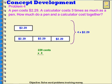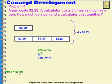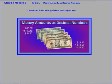So let's multiply two hundred twenty-nine cents times four. Four times nine is thirty-six. Four times two is eight, plus three more is eleven. Four times two is eight, plus one more is nine. So I have nine hundred sixteen cents. Nine hundred sixteen cents is equal to nine dollars and sixteen cents. That'll take care of things for lesson sixteen, where we've been solving word problems involving money.